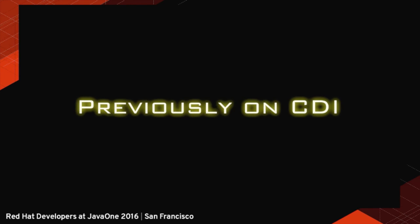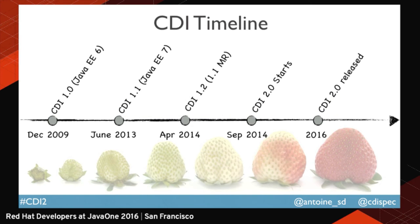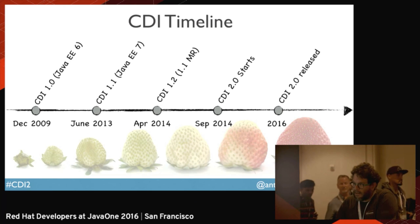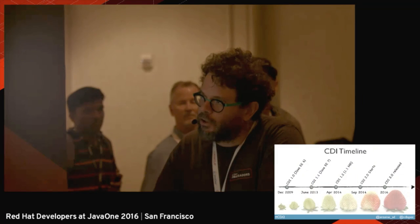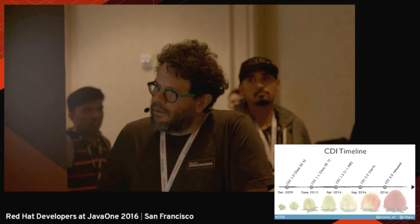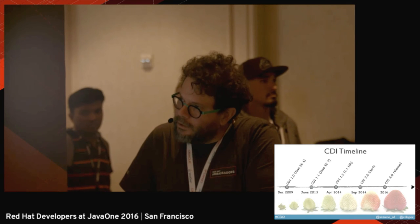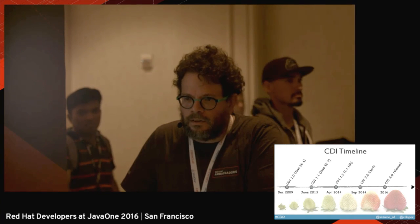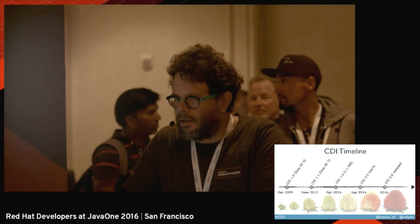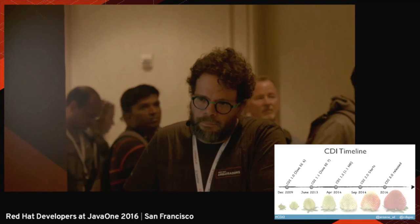Let's go for a flashback on CDI. It's a rather young specification — it was launched in 2009. We had two major versions since then. There was a new release of CDI with Java EE 7. Today, if you use CDI on your application server, you are probably using the CDI 1.2 version. We started work on CDI 2 nearly two years ago, and we should release at the end of the year or beginning of next year.